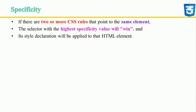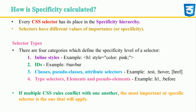When two different selectors are used but both select the same element, precedence is decided by specificity rules. We can think of specificity as a four-digit number where the greater number wins. Selectors have different values of importance: type selectors, class selectors, ID selectors, and inline style sheets, each increasing in specificity.